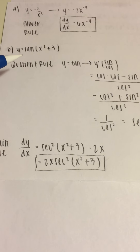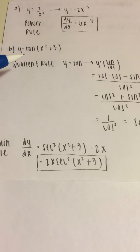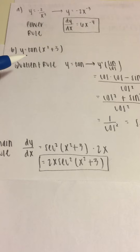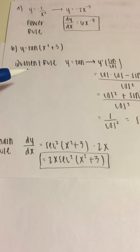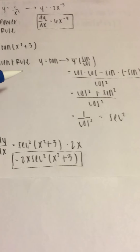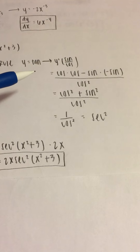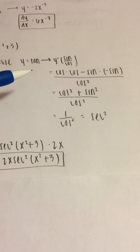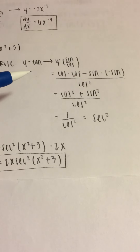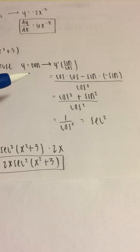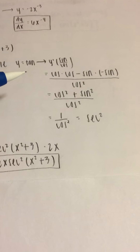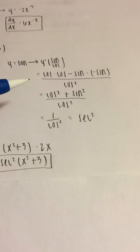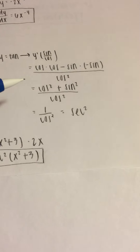First, we need to find the derivative of tangent. To do so, I'm going to use the quotient rule. I just rewrote tangent as sine over cosine, using the trig identity that tangent equals sine over cosine.